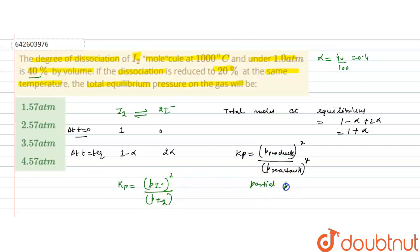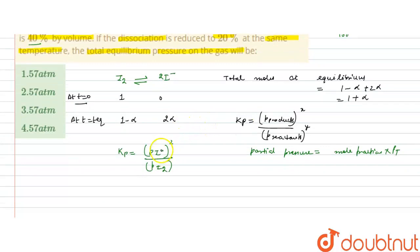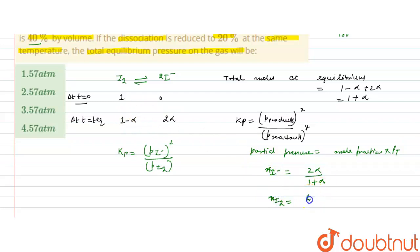Partial pressure equals mole fraction multiplied by total pressure. The mole fraction of I is 2α/(1 + α), and the mole fraction of I₂ is (1 − α)/(1 + α). These are then multiplied by the total pressure to get the respective partial pressures.